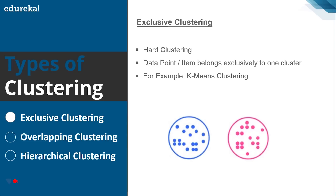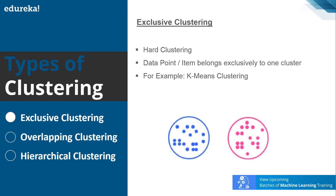Let's see what the different types of clustering are. We have mainly three different types: exclusive clustering, overlapping clustering, and hierarchical clustering. Exclusive clustering is a hard clustering in which data points exclusively belong to one cluster. An example is K-Means clustering. In the diagram, all the blue data points lie within the blue cluster and all the pink data points lie within the pink cluster — both clusters are entirely different from each other.